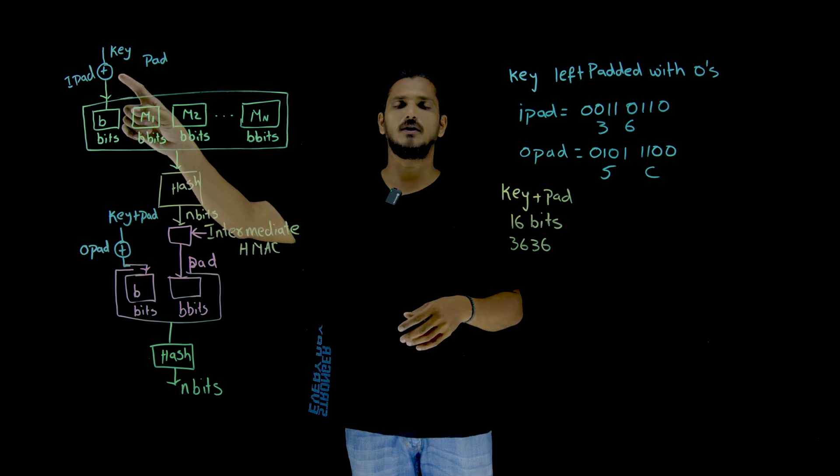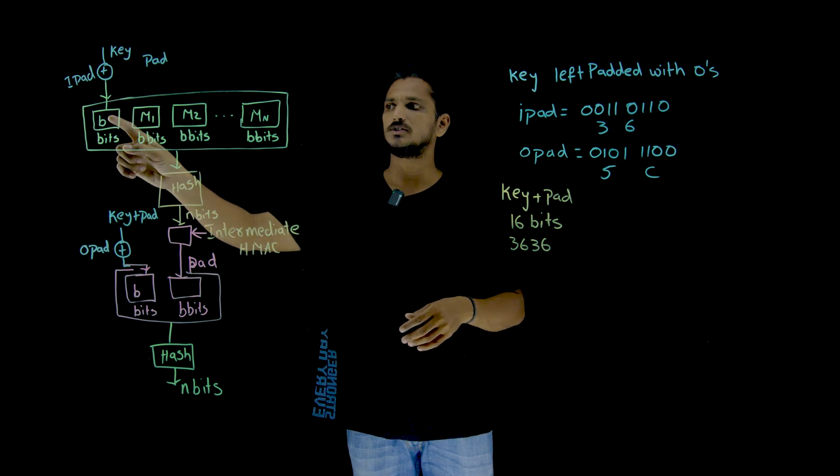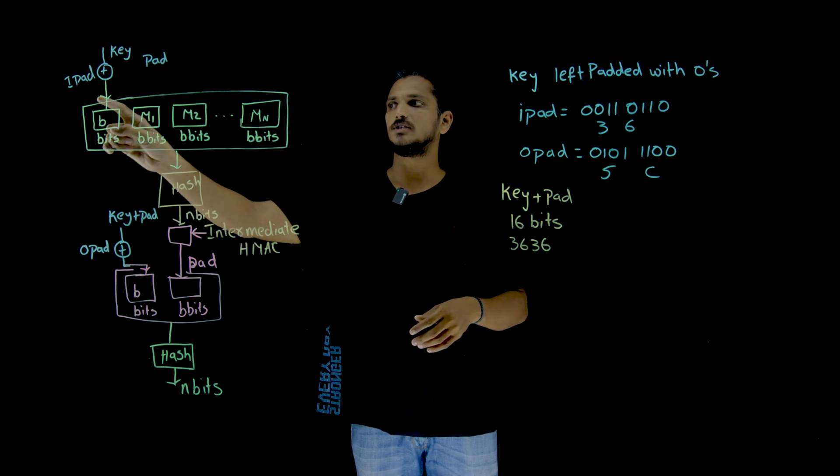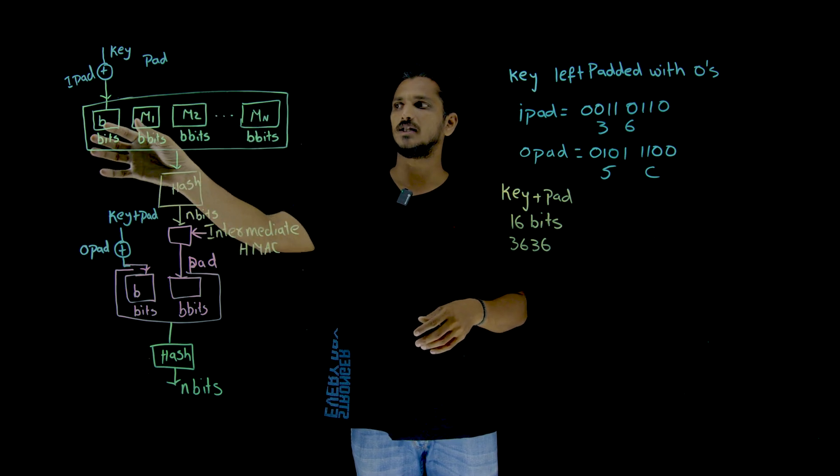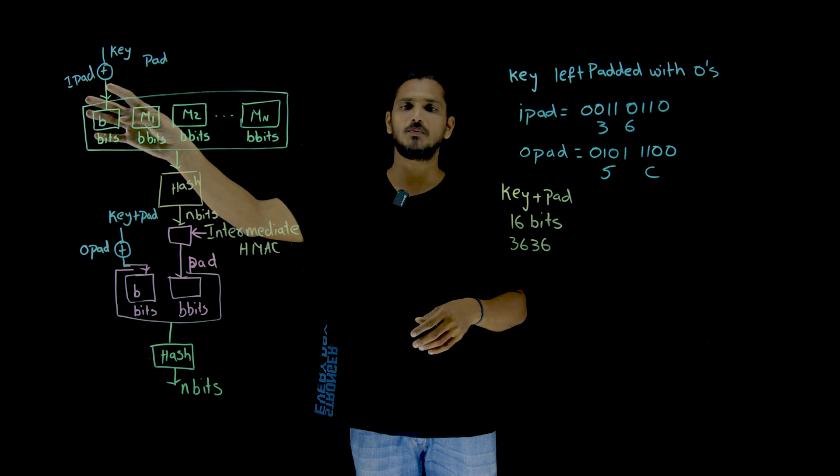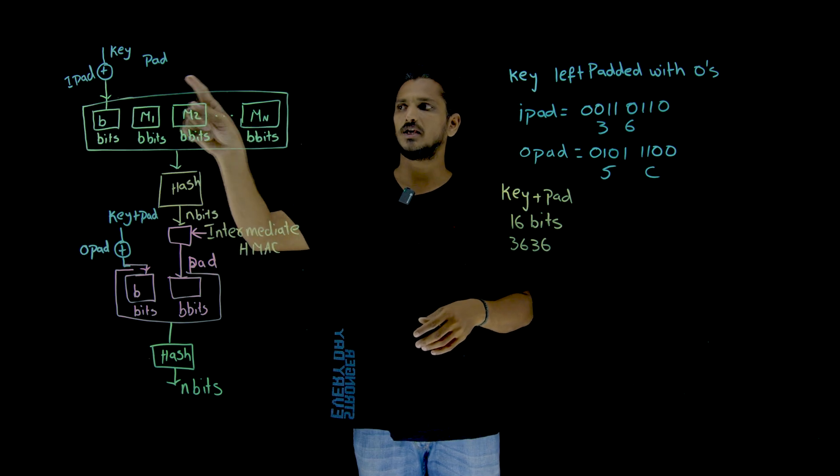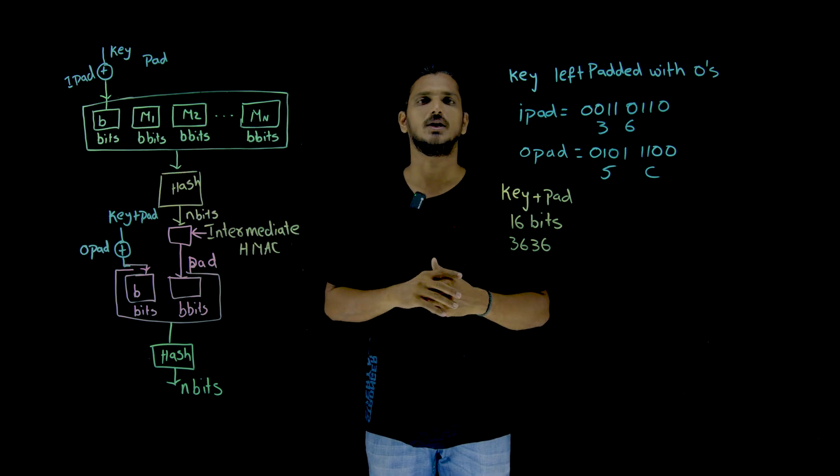That is what repeat this until b by 8 times. And XOR, the output which we got is b bits. So this entire thing, the message and the key XOR with iPad value, this entire thing is taken as input to the hash function.